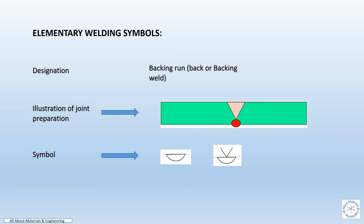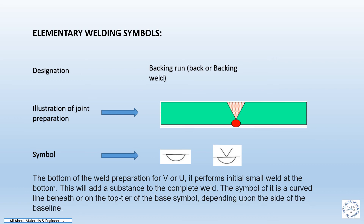The elementary welding symbol for backing run or backing weld and the symbol to be incorporated in the drawing. At the bottom of the weld preparations for V or U joints, it performs initial small welds at the bottom. This will serve as a substrate to the complete weld. The symbol is a curved line beneath or on top of the base symbol, depending upon the side of the baseline.